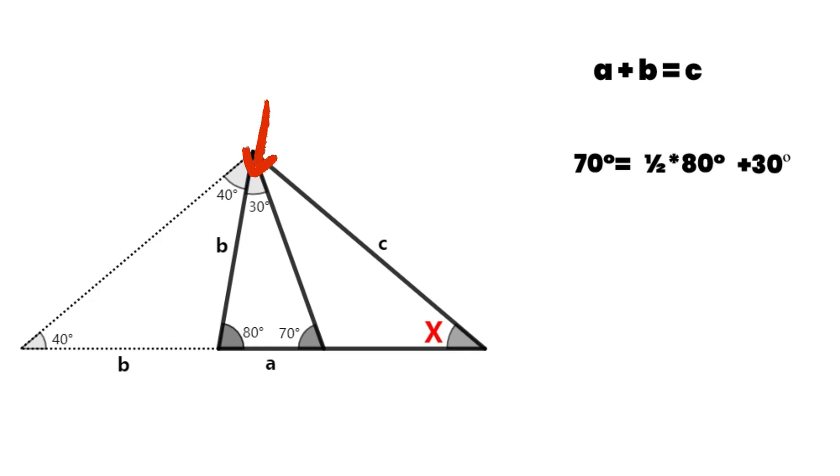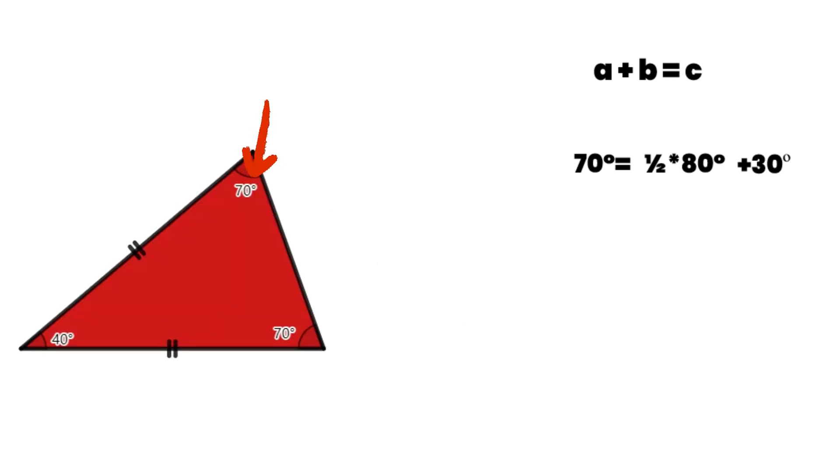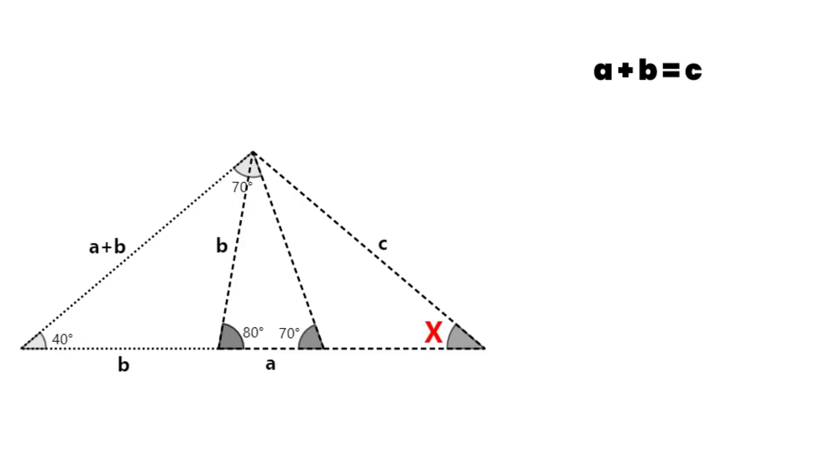30 degrees plus 40 degrees equals 70 degrees. Therefore, this red triangle is also an isosceles triangle. Both sides are equal to A plus B.